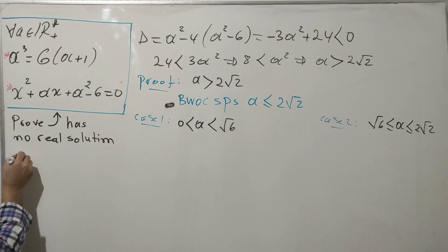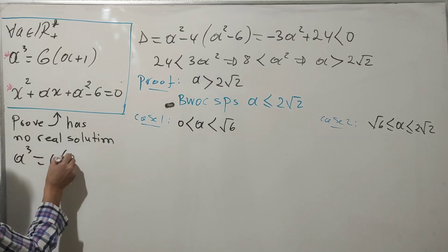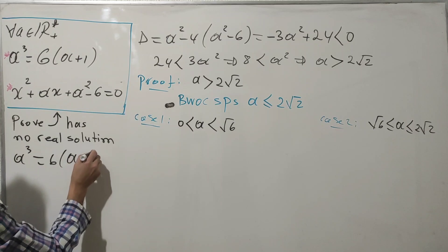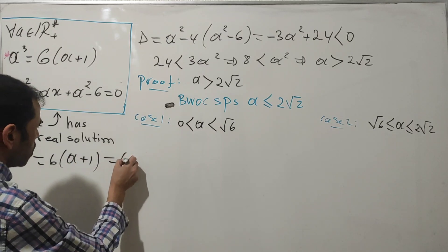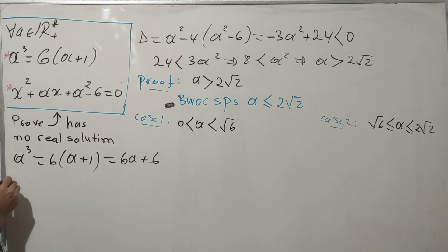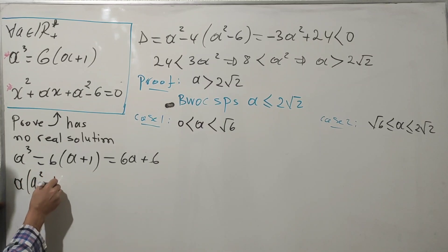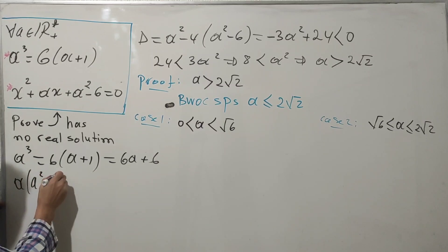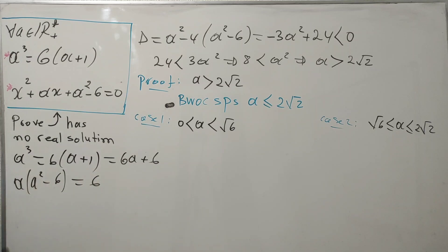Before we proceed, let me make a useful transformation of the first equation. From a³ = 6(a + 1), we get a³ = 6a + 6. Bringing 6a to the left and factoring out a, we get a(a² - 6) = 6. This is the key equation we will use.